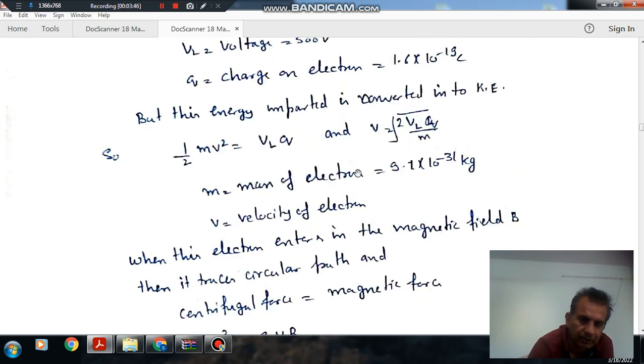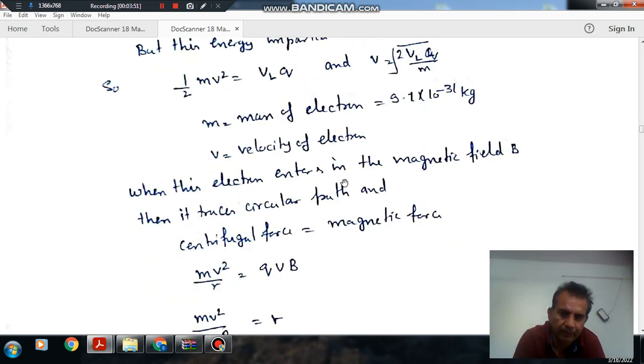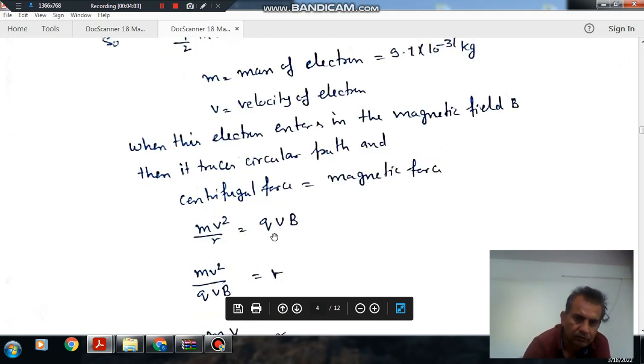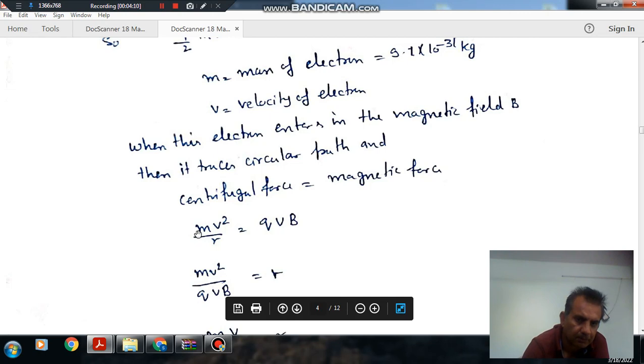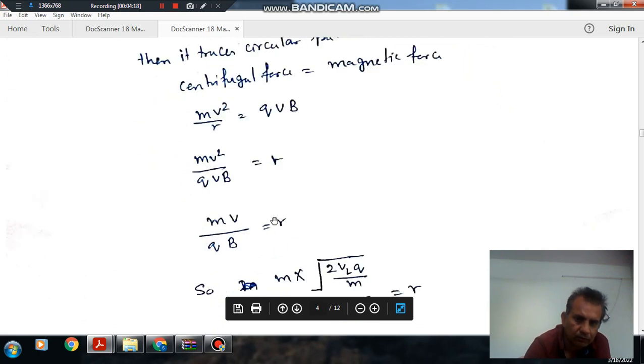This energy imparted to the electron will be converted into kinetic energy. If M is the mass of the electron and v is velocity of the electron, then (1/2)Mv^2 equals V×Q, so velocity will be √(2VQ/M). When this particle enters the magnetic field, it will rotate in a circular path. The magnetic force QvB is balanced by centrifugal force Mv^2/R, so R = Mv/(QB).